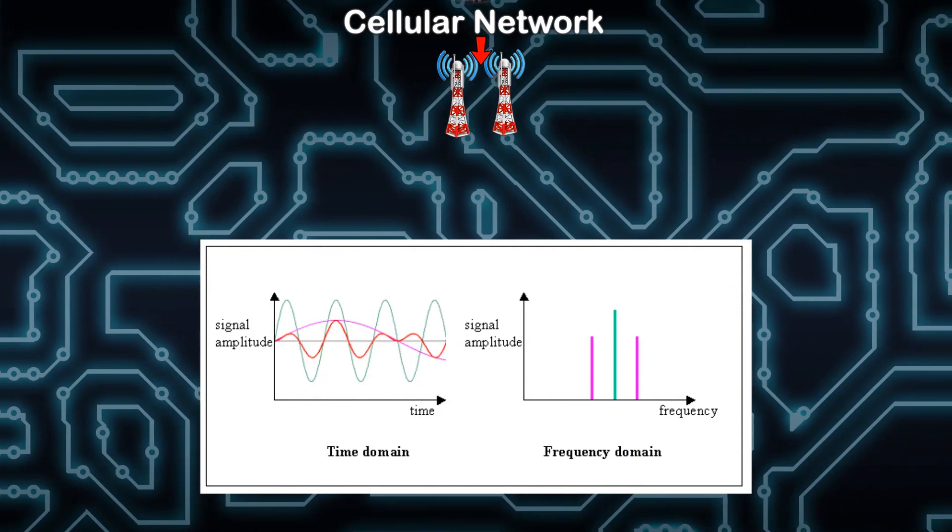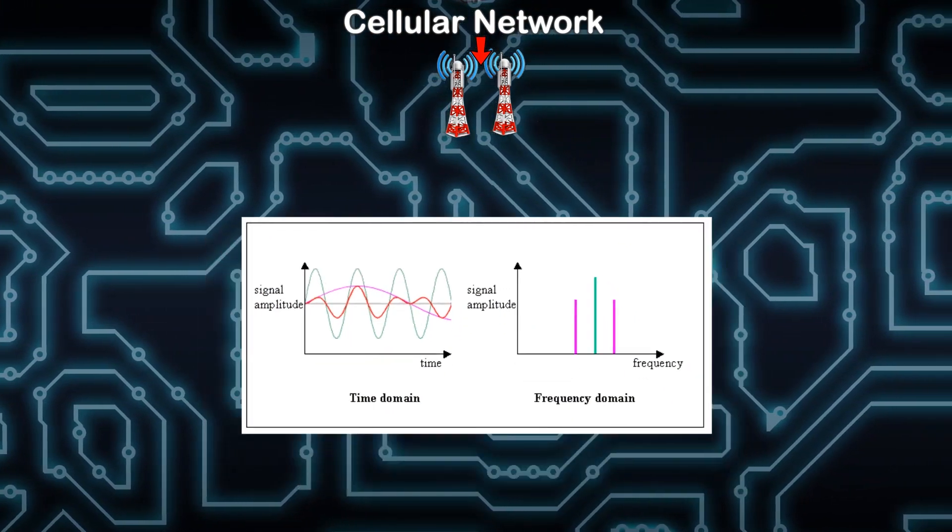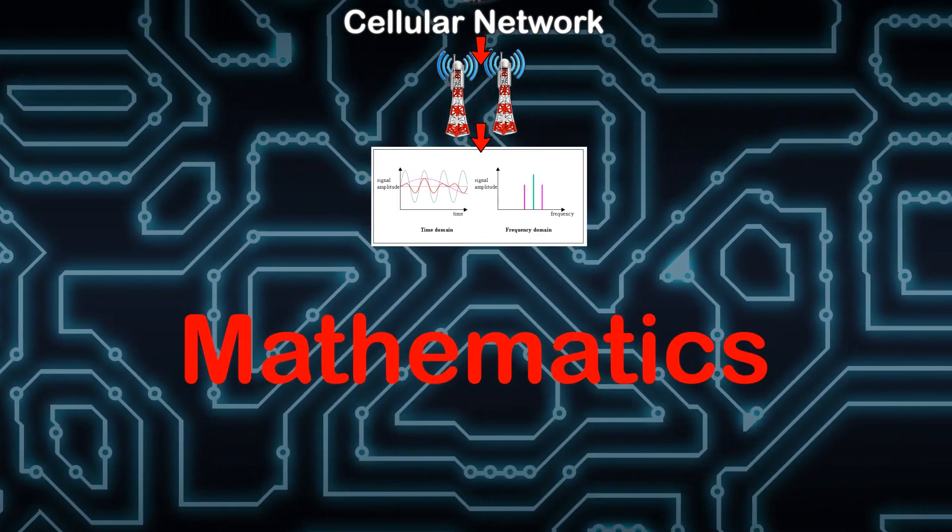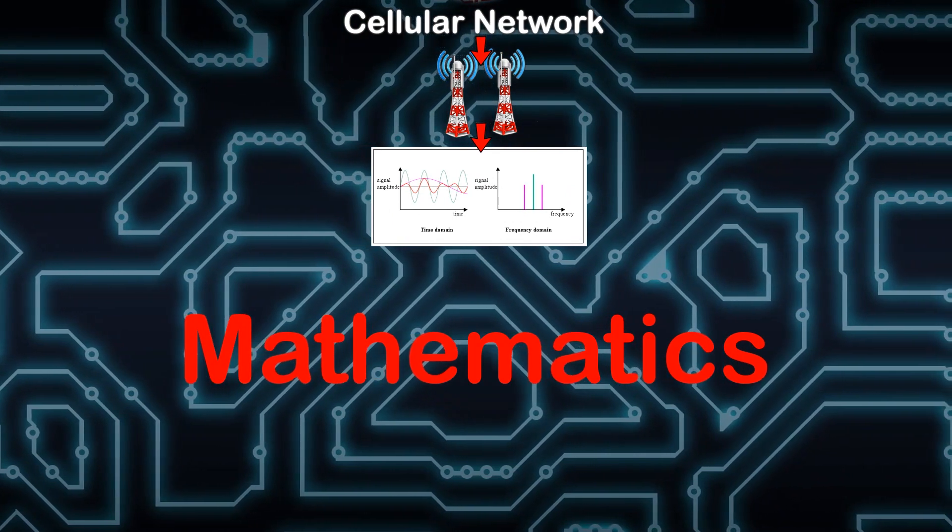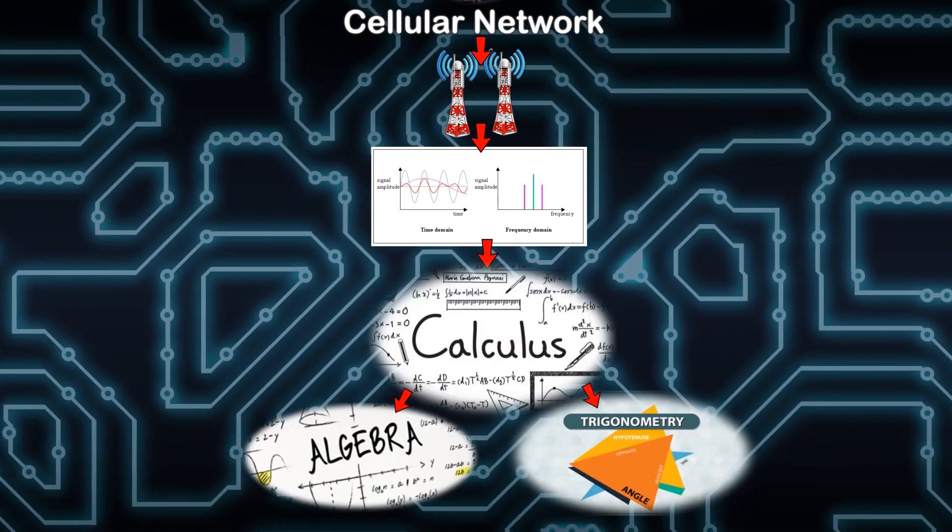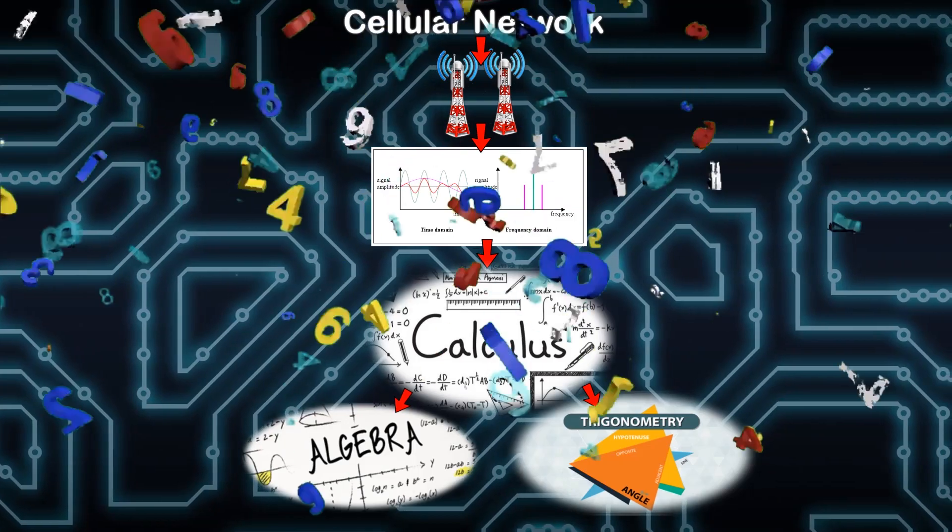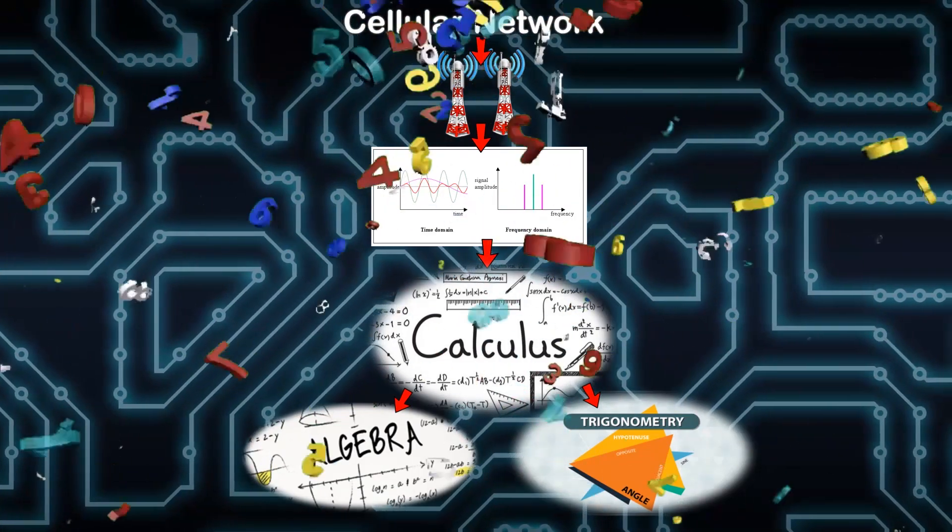So a signal is basically a function of time or frequency. Wait, mathematics. We haven't discovered anything in mathematics yet. We would need algebra and calculus. For all this you will need a proper number system. This seems like a lot of work. Okay, let's start with something simple.